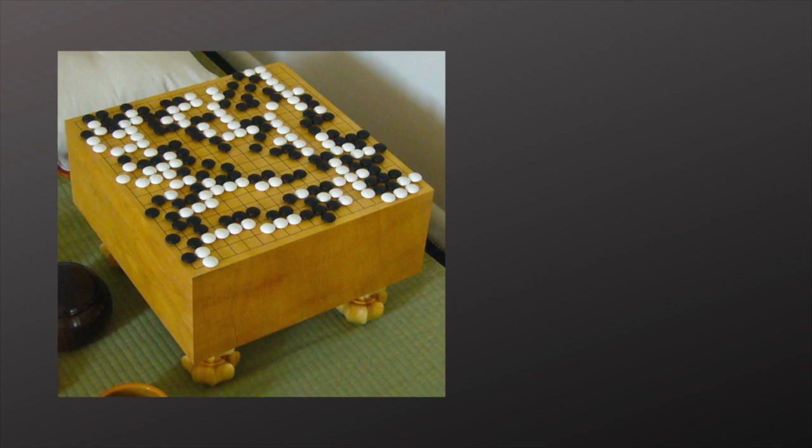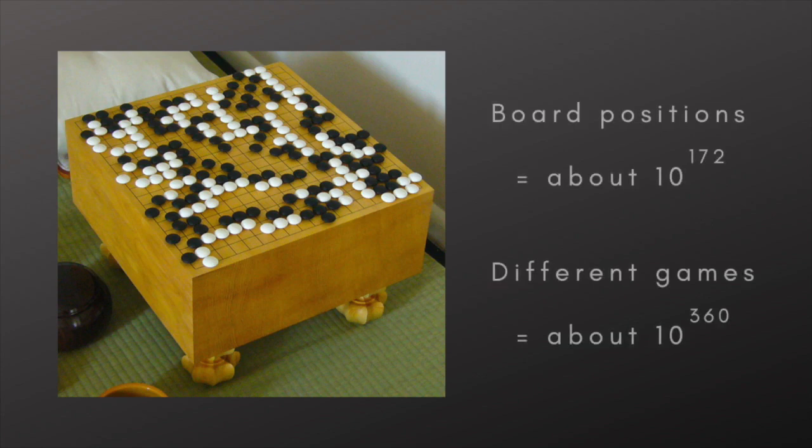A vastly more complicated game than any I've yet mentioned is Go. Invented in China some 2,500 years ago, it's most commonly played on a square grid made up of 19 by 19 lines. Two players, black and white, take it in turn to play stones of their color at the intersections of the lines. Although the rules are simple, the strategy needed to play well is fiendishly hard. Go is estimated to allow about 10 to the 172 board positions, and about 10 to the 360 different games.